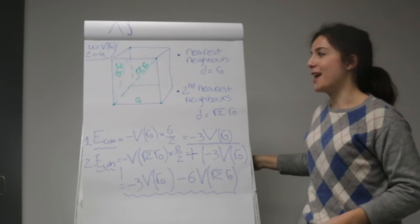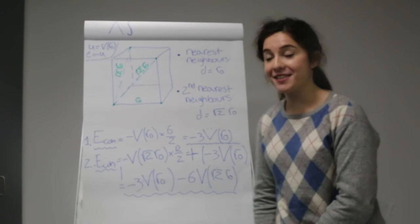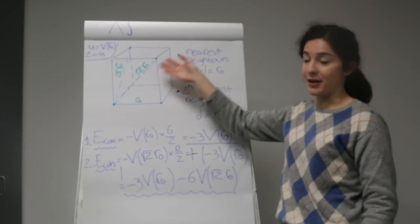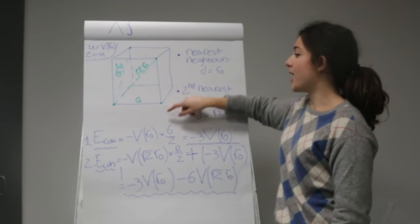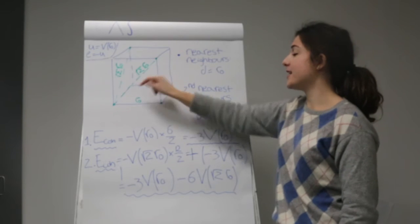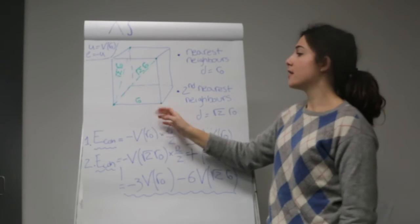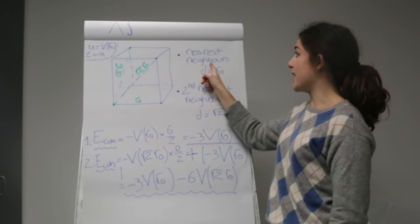So here is an example on how to calculate cohesive energy for a material. This is a material that is arranged in simple cubic structure. So there's a cube, and the atoms are at each corner, and they are at a minimum distance R0.